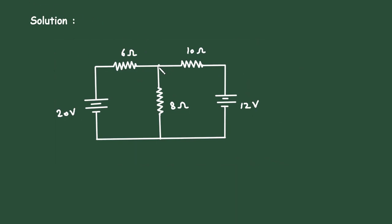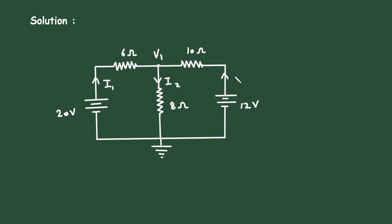Let us say this is node 1 with voltage V1, and this is the reference node or ground node with 0 voltage. According to the polarity of the voltage sources, let us say this is current I1, this is current I2 directed towards the reference node, and this is current I3.